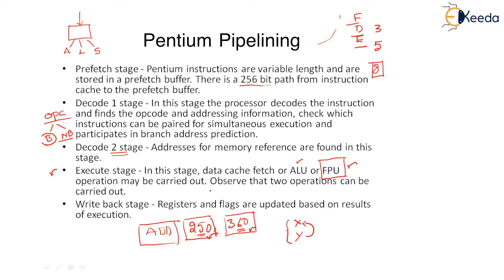In the Write-back stage, the moment we are ready with the output from the ALU, this output should be transferred to the registers. These registers will be written — in addition to main memory — in the write-back stage. Registers and flags will get updated based on the result of the execution. This is all about Pentium pipeline.